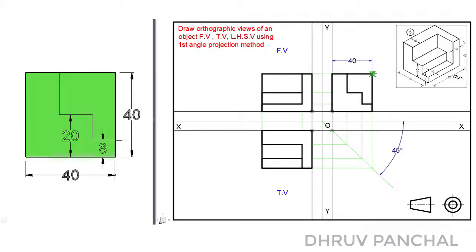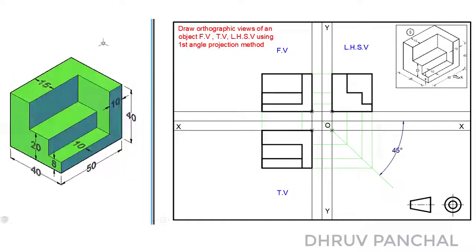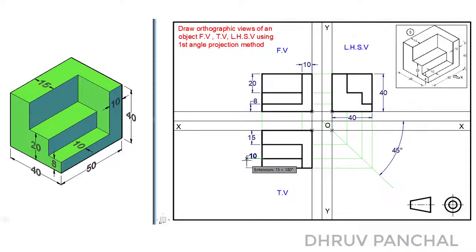Let me show you the dimensions of the left hand side view so that you can draw it easily. Also mention the name of the view, which is left hand side view. Now mention the dimensions as per the dimensioning rule. I hope you understood it. If you have any questions, let me know in the comment box. Thank you.